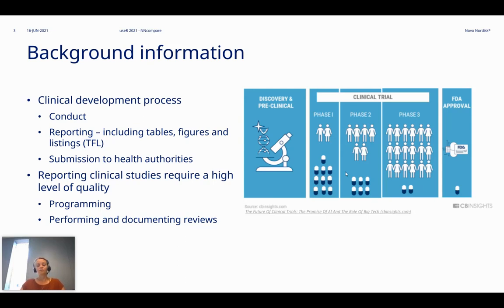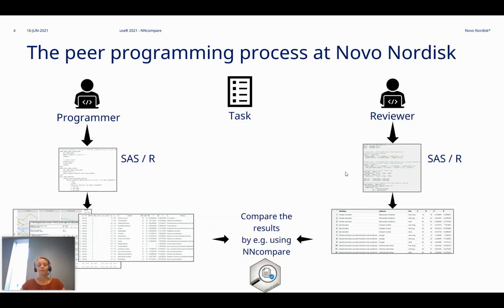Accordingly, key results must be what we have here called peer programmed. The peer programming process at Novo Nordisk involves two persons: the programmer and the reviewer, and they are both working on the same task, which could for instance be a statistical analysis based on key data from a clinical study. The programmer develops a program, most often in SAS but it could also be in R. The program typically produces the data frame with the results of the statistical analysis and also some tables or plots to be included in the clinical study report.